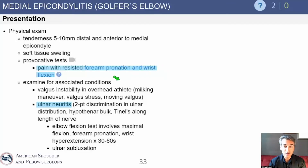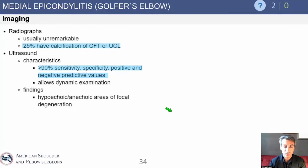Associated conditions are important to examine for. For valgus instability, the go-to exam is a valgus stress test — a moving valgus stress test is the most sensitive and specific, and that's a potential test question. For ulnar neuritis, there are ways to examine for that. The elbow flexion test can also be consistent with a clinical diagnosis of ulnar neuritis.